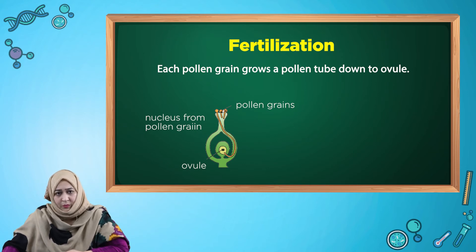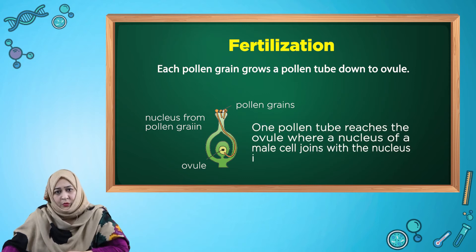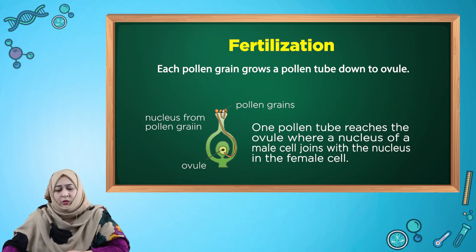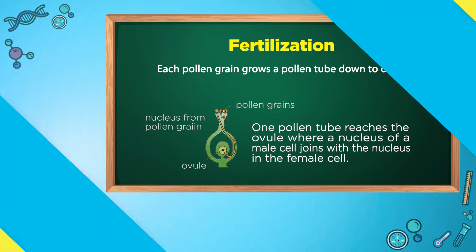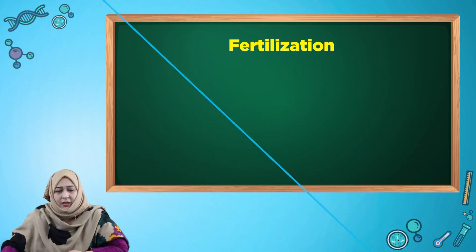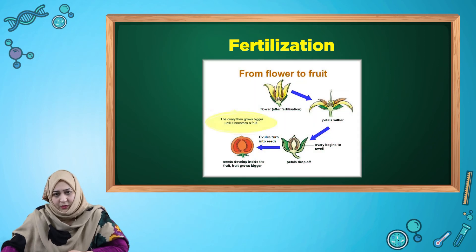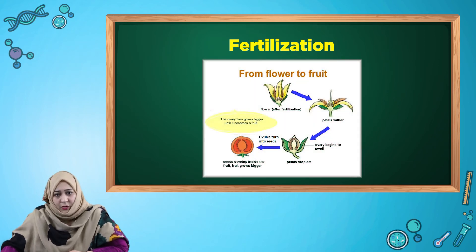After pollination, fertilization takes place. Each pollen grain, when it drops on the stigma, grows into a pollen tube that reaches down to the ovule. One pollen tube reaches the ovule, where the nucleus of the male cell joins with the nucleus of the female cell.